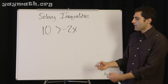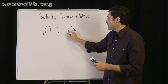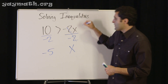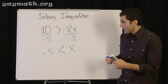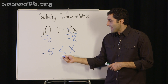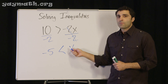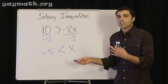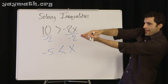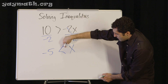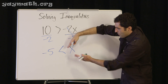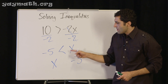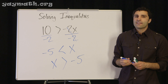All right, how do we get x by itself? Divide both sides by negative two — x is on one side, negative five on the other. Did we divide both sides by a negative? Yes. Do we flip the sign? Yes. So this means negative five is less than x, meaning negative five is smaller than whatever x is, and that means x is bigger — x > -5.